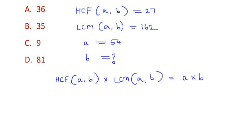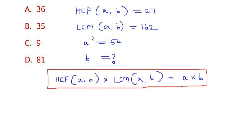So we have to simply make use of this formula and plug in the values they have given in the question. So the HCF is given as 27, the LCM is given as 162, and we have taken a as 54.